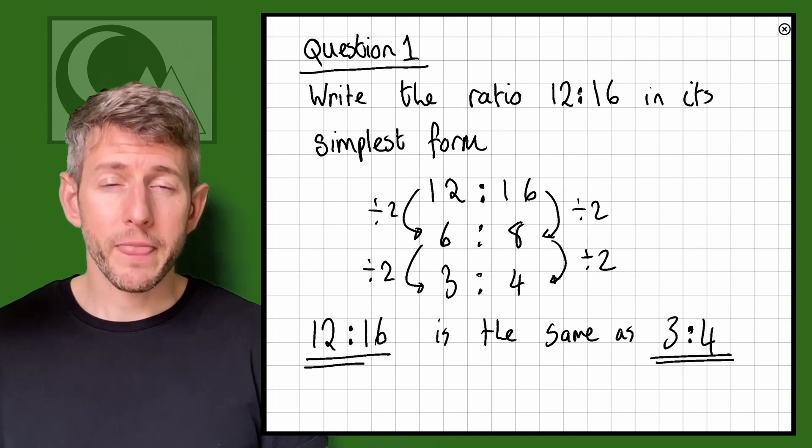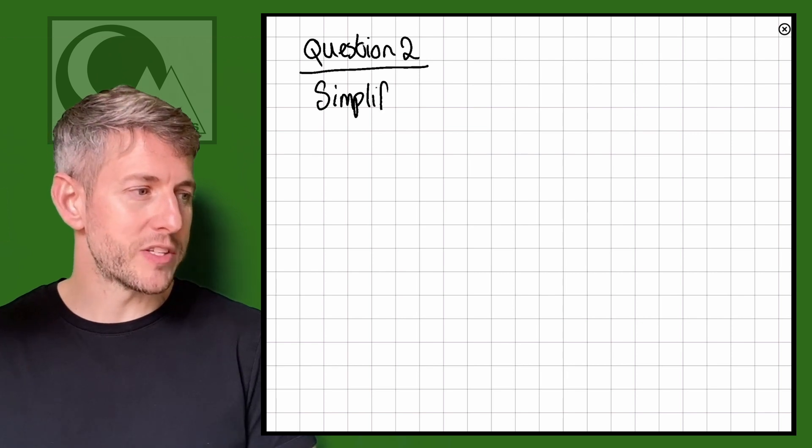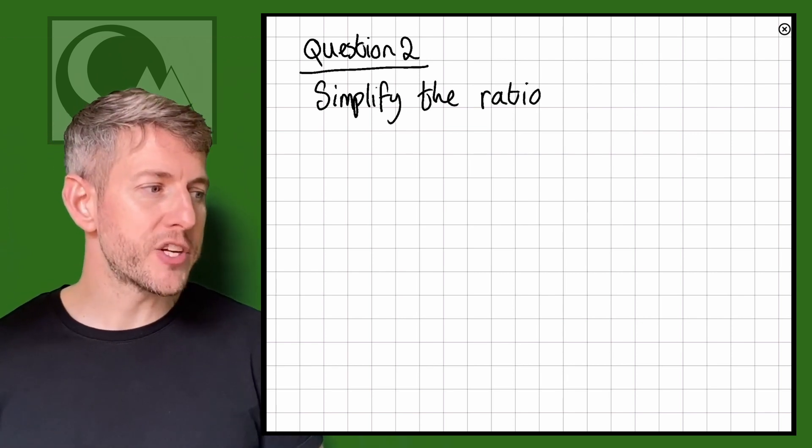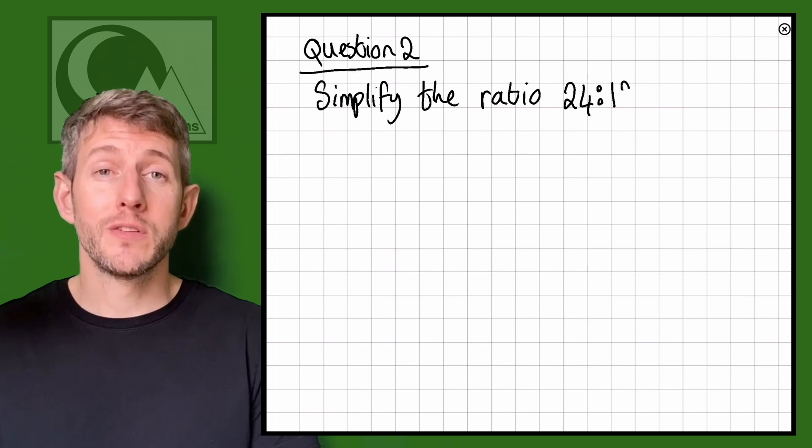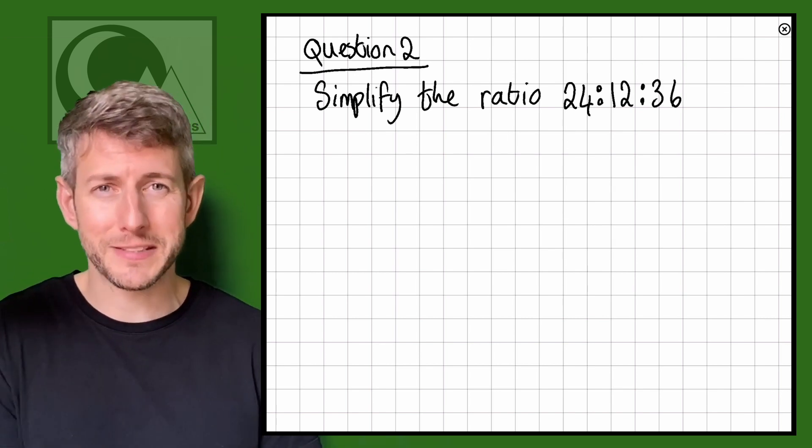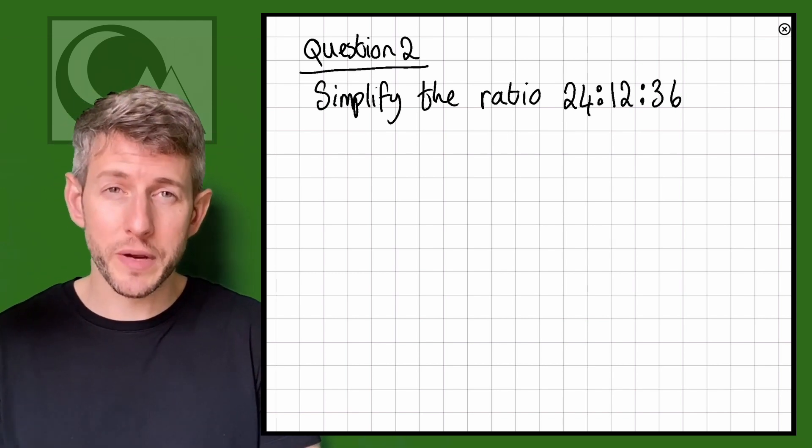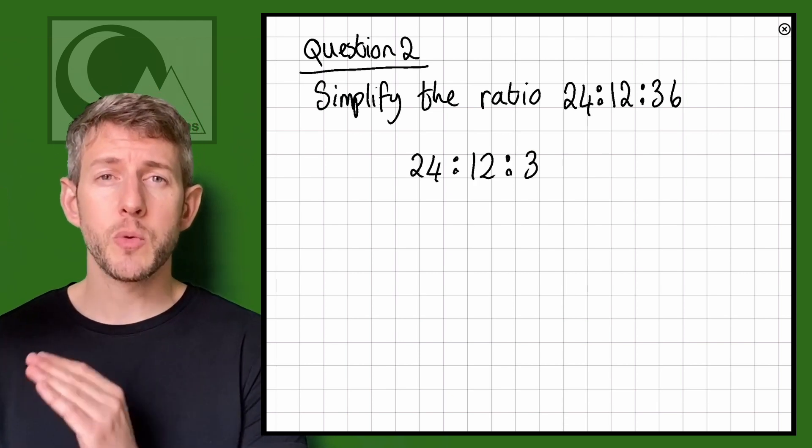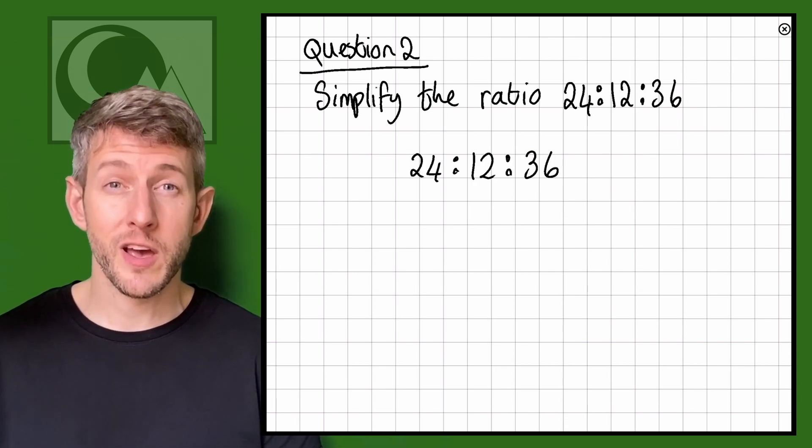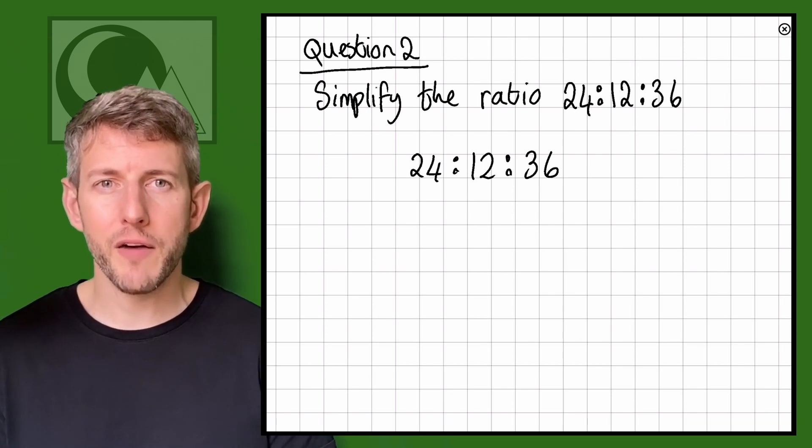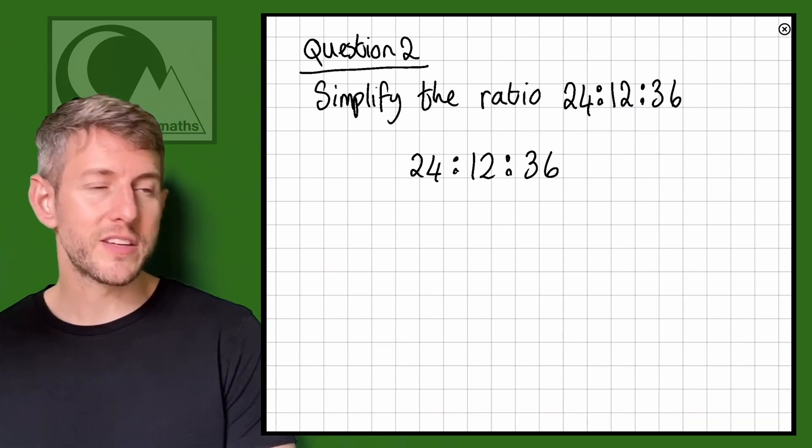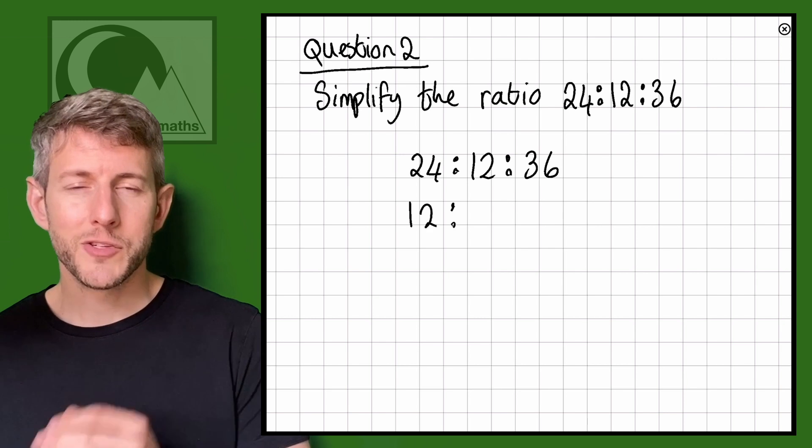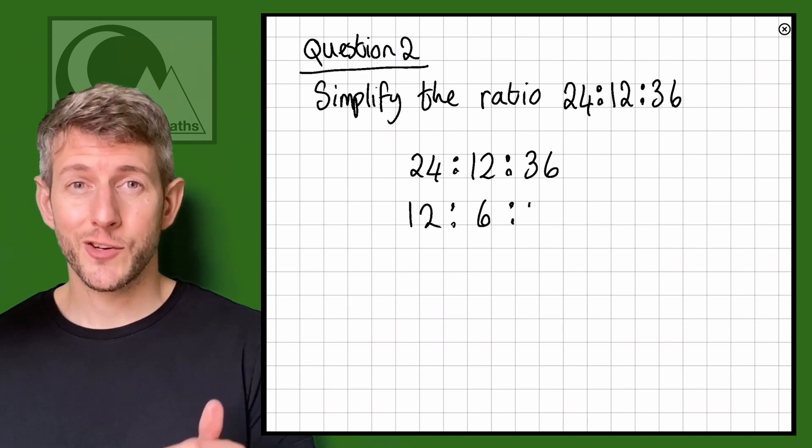Let's have a look at another question here. This question says simplify the ratio 24 to 12 to 36. I'm not going to draw this one out, I'm just going to go straight to the number method. So 24 to 12 to 36, I can instantly see that we can halve all of these so that's going to give us 12 to 6 to 18.